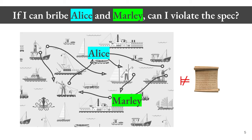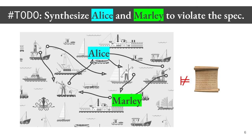An interesting question becomes: if I can bribe Alice and Marley, can I make the entire system violate a specification? Alice is the person replaced with the big blue word Alice, and Marley is the person replaced with the big green word Marley. If I can bribe each of them to behave in some way other than how they otherwise would have, can I induce the entire system to violate the charter of the harbor? The problem we solve is not for exactly two vulnerable processes, but for arbitrarily many. My to-do item is to automatically synthesize some replacement for Alice and some replacement for Marley, such that when I replace them, the modified system should violate the specification.